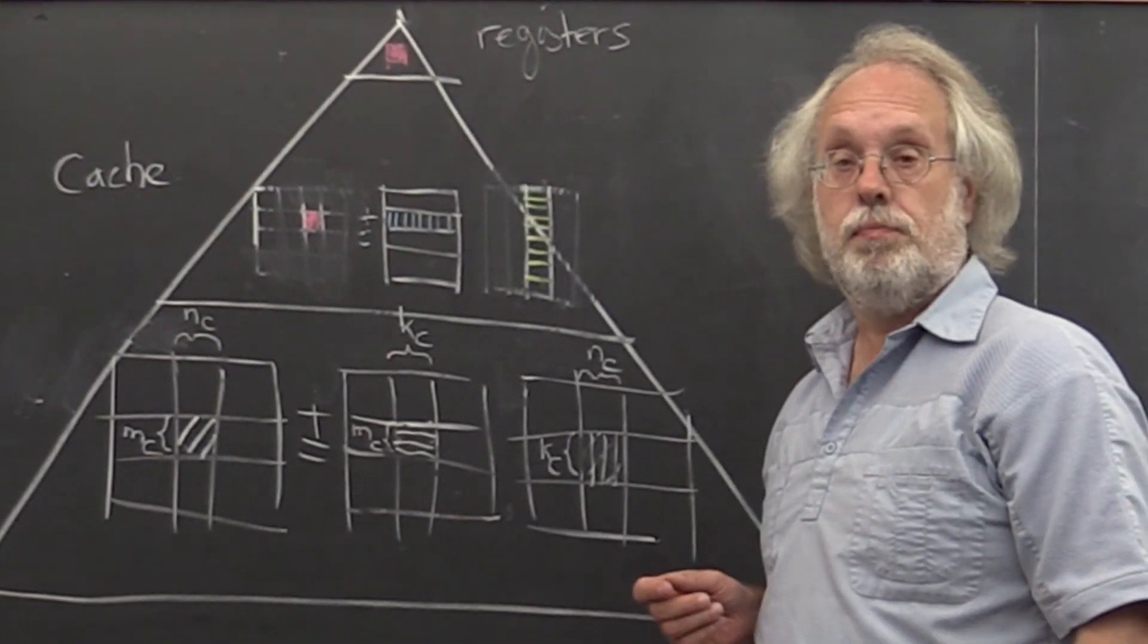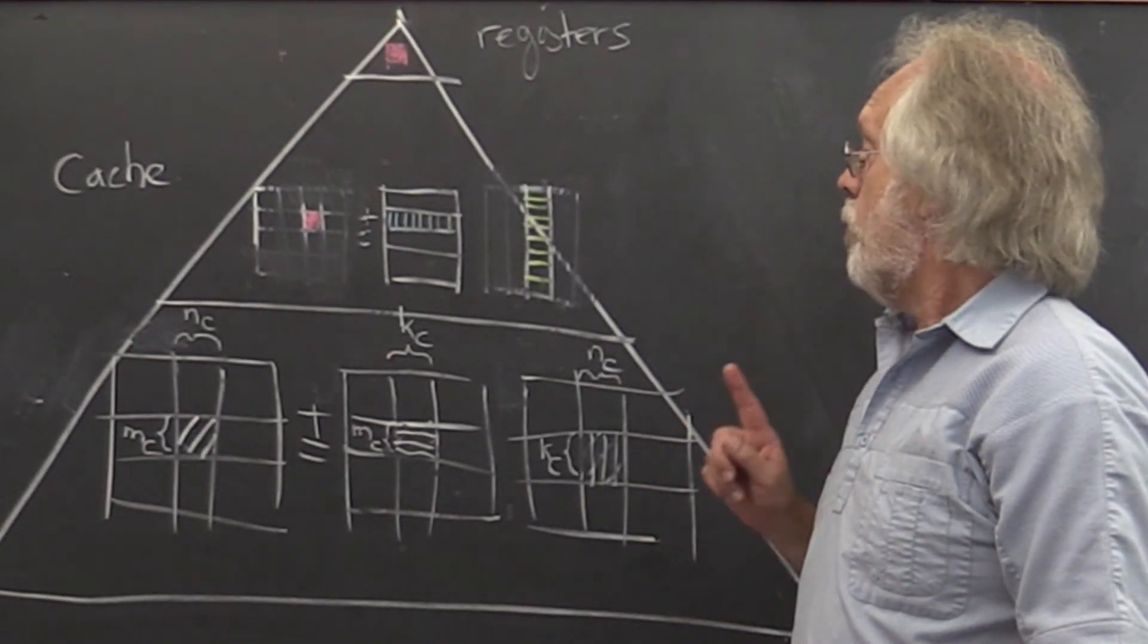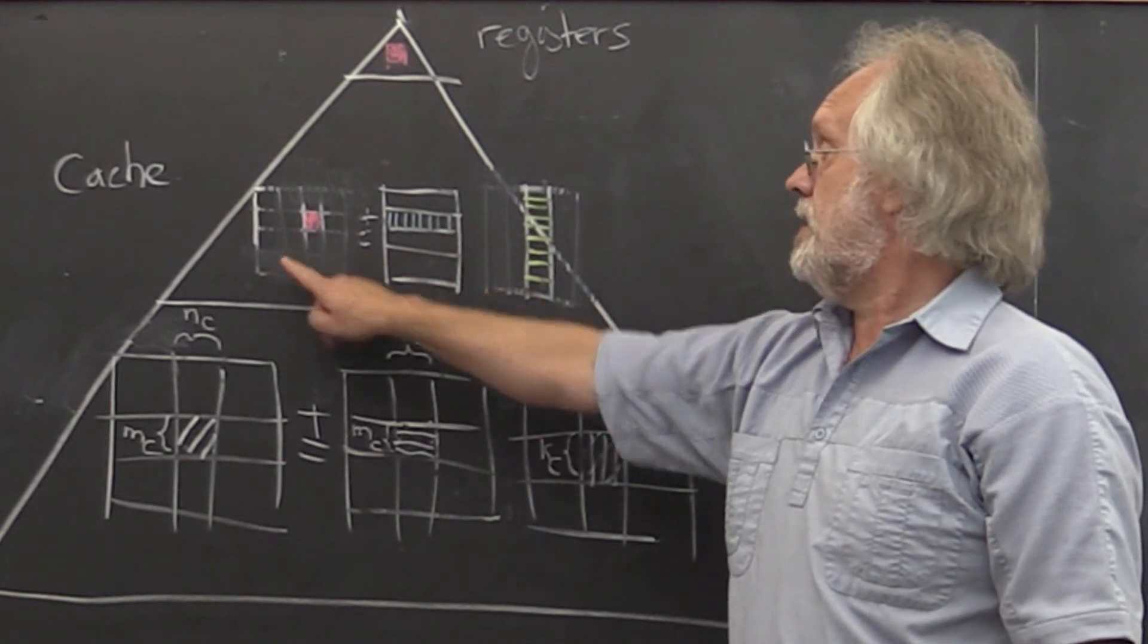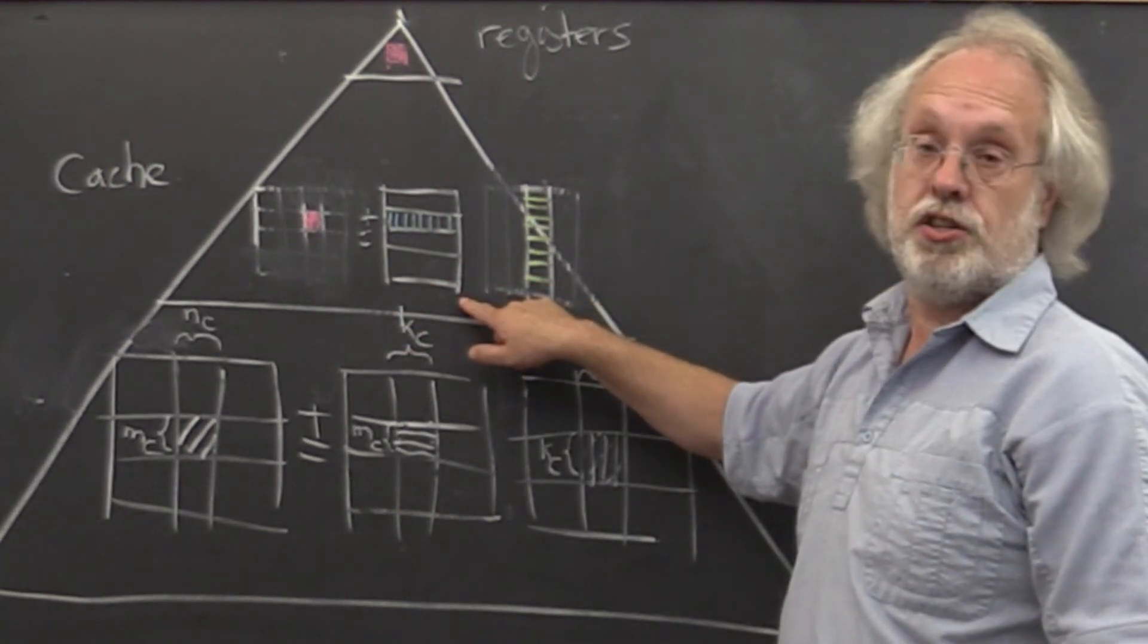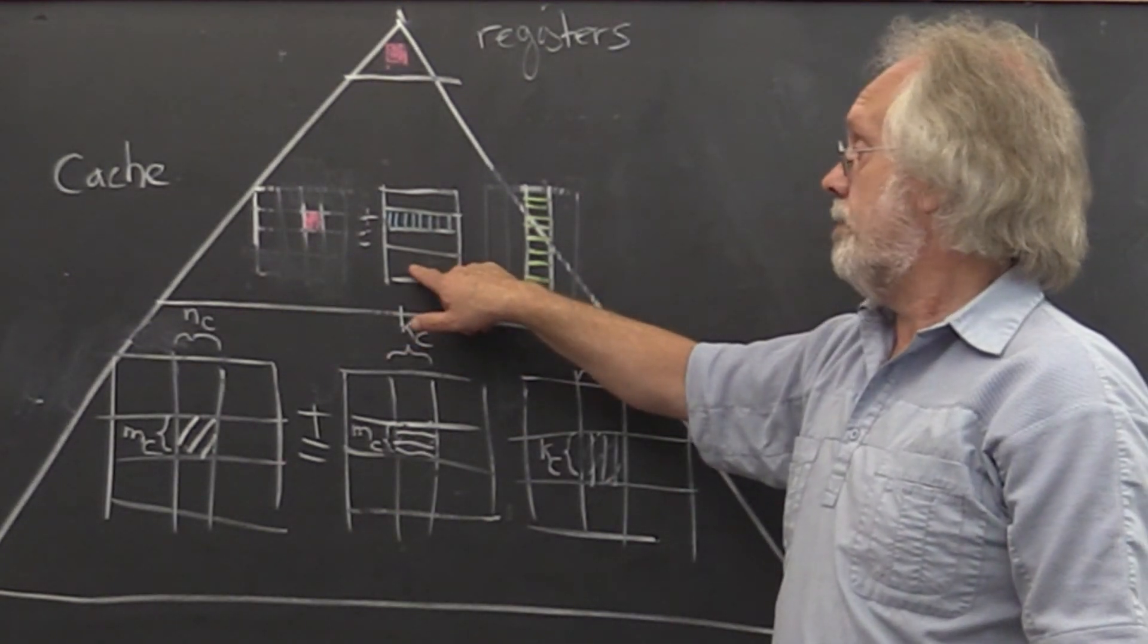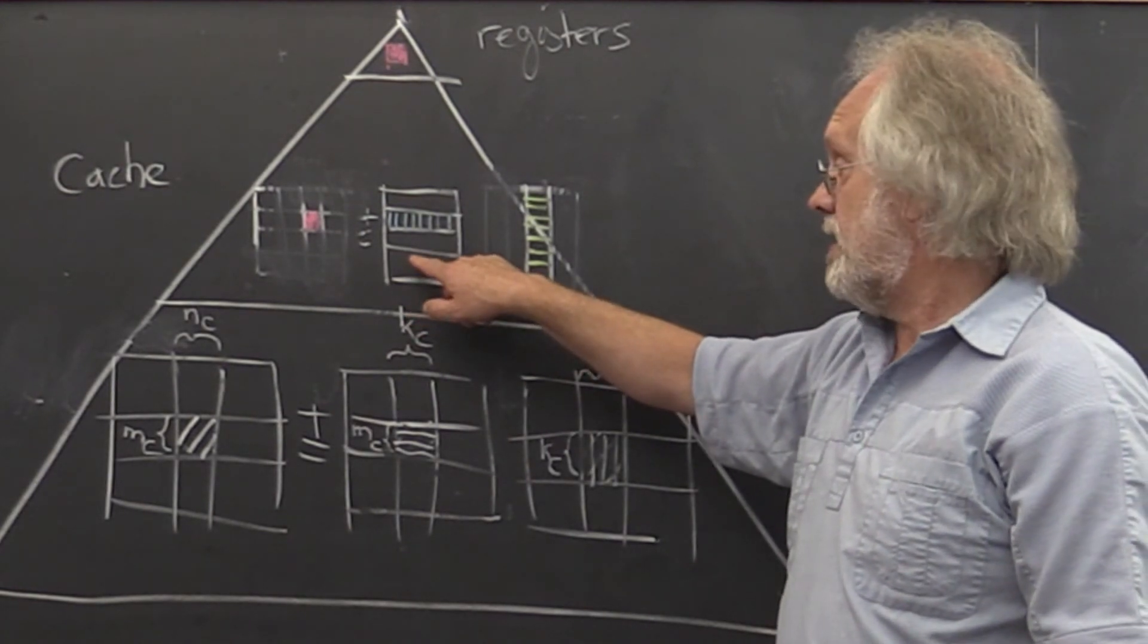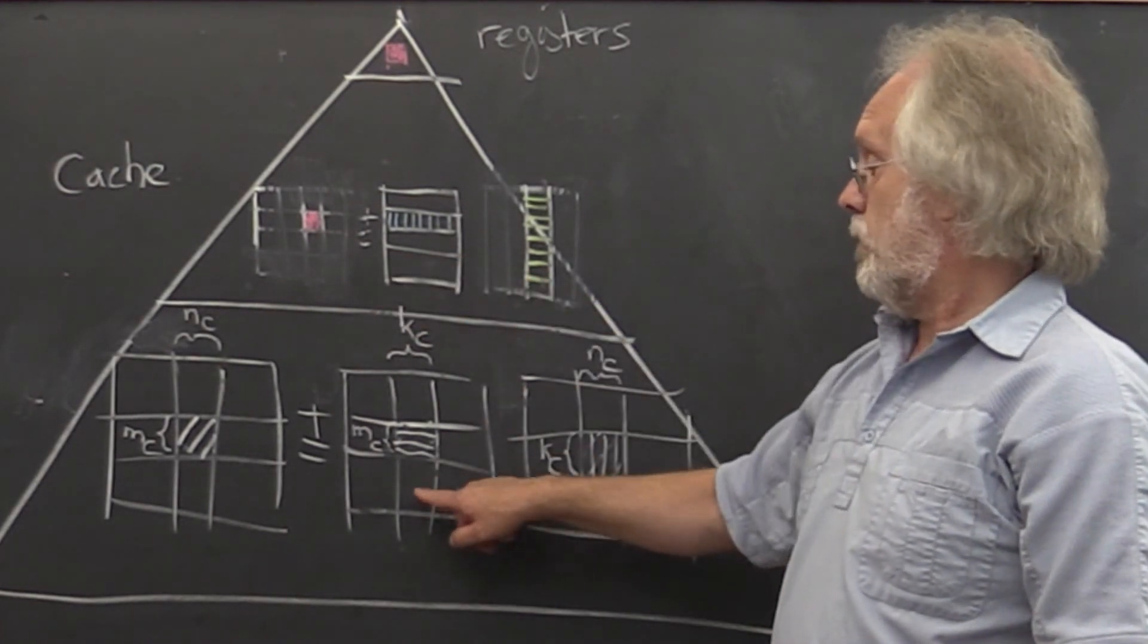So why is this important? This is important because if we need to store less of C and less of B in the cache, then we can store more of A in the cache.